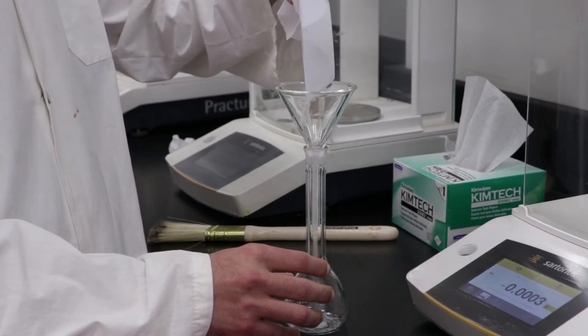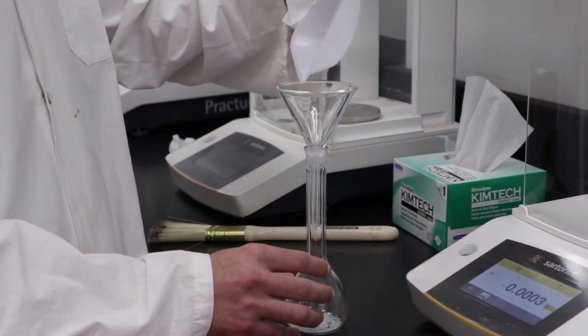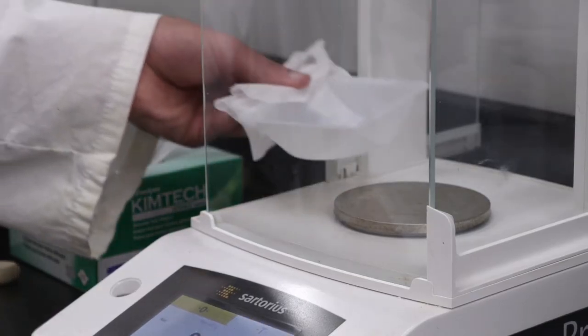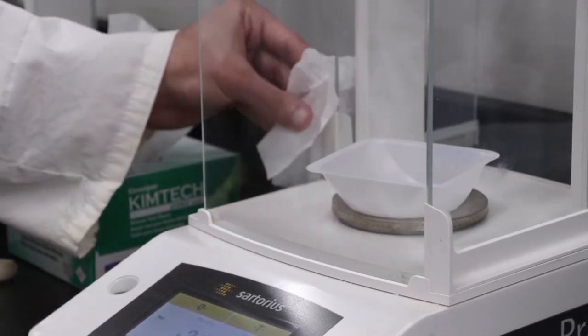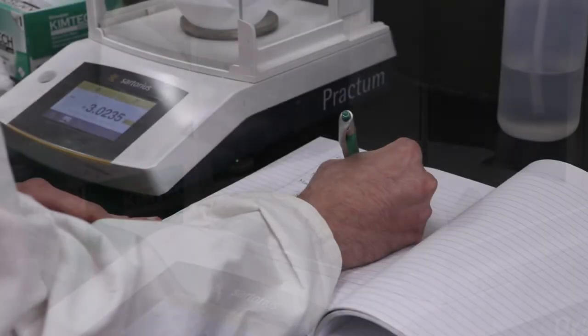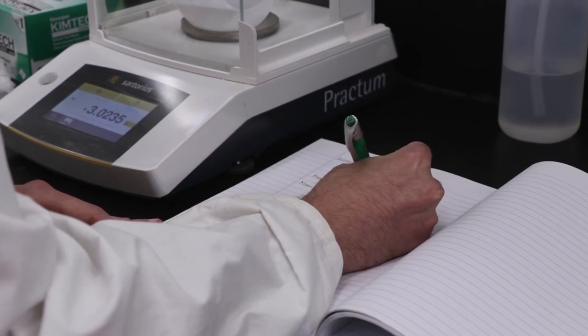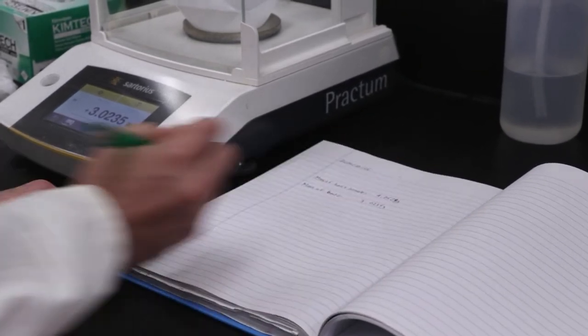Transfer the solid into a volumetric flask using a funnel and re-weigh the weighing boat plus any solid that is adhering to its sides. Record this empty mass in your notebook. The difference in the two measurements is the mass of the sample in the flask.